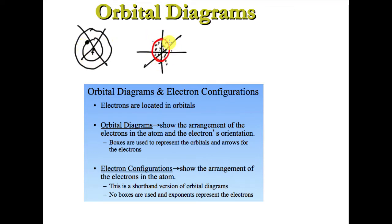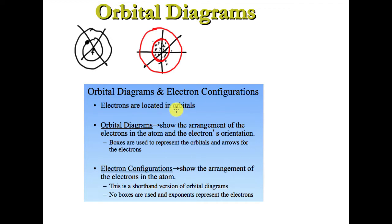We can't say for sure that the electron is in a distinct orbit, but it's located somewhere in space close to the nucleus. As the energy level gets bigger, the distance the electron can get also gets a little bigger. We're still seeing those concentric circles — more like three-dimensional spheres — but the idea is that electrons are in orbitals. I'm not going to get into the whole background or origins of orbitals. We're going to start looking at how electrons are placed into the orbitals.